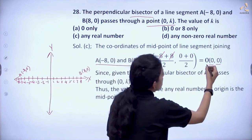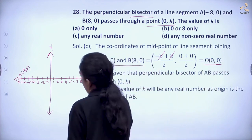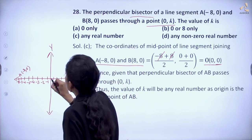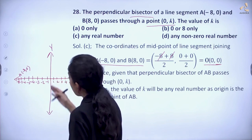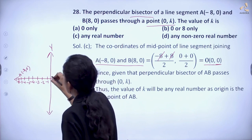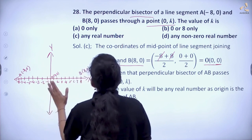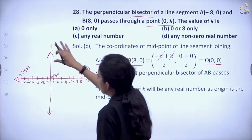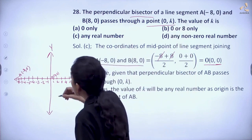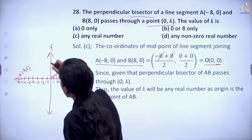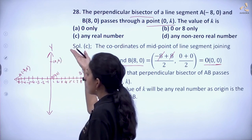So this line passes through the origin. Of course, that line will be our y-axis. Now we are told that this line passes through some (0, k) point. So it can be anything at (0, k)—it can be any real number.